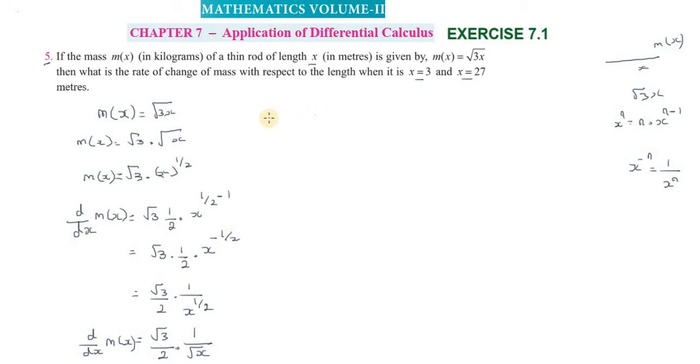Now we substitute the values. When x = 3, we get (√3/2) · (1/√3). The √3 cancels out, giving us 1/2. So the answer is 1/2 kilogram per meter.